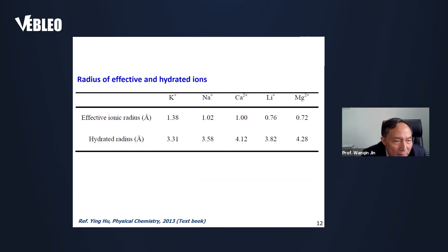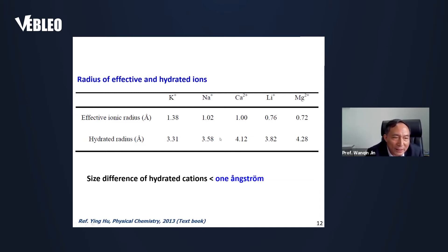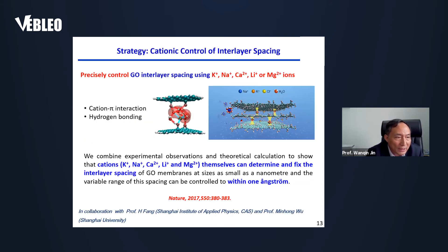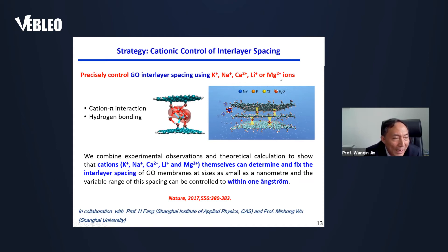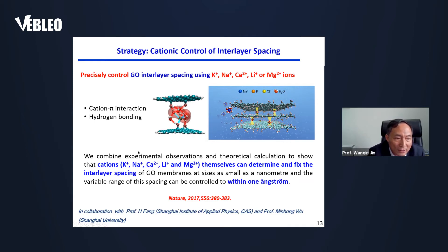The size difference of hydrated cations is less than 1 angstrom, which demands precise tuning of the interlayer channels of GO membranes. We propose a strategy of cationic control of interlayer spacing, precisely controlling GO interlayer spacing using potassium, sodium, calcium, lithium, and magnesium ions. We combined experimental observation and DFT calculation to show that cations themselves can determine and fix the interlayer spacing of GO membranes at a size as small as a nanometer, with the variable range controlled to within one angstrom.